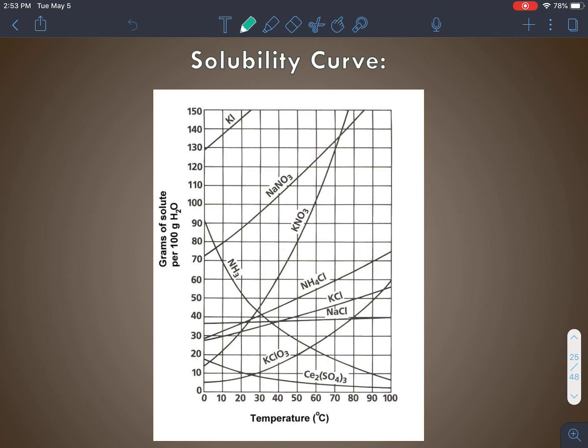So a solubility curve basically represents a bunch of different substances and then what happens to their solubility at different temperatures.